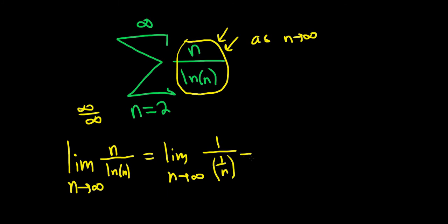So this is equal to the limit as n goes to infinity. 1 divided by 1 over n is really 1 times n over 1, and this is infinity. So this is not equal to zero, so our series diverges by the nth term test.